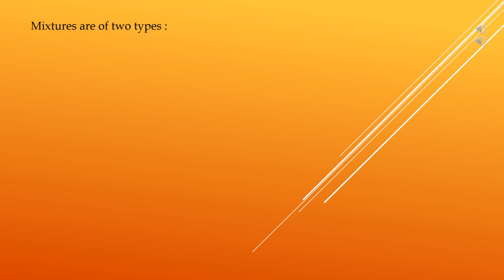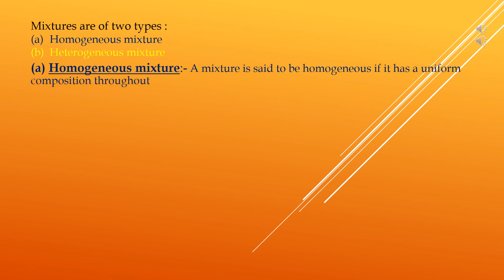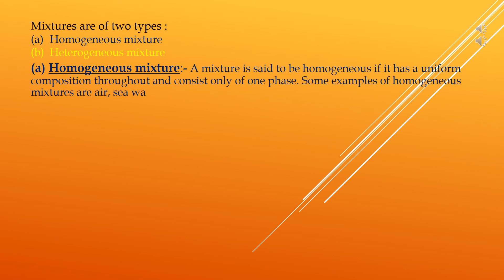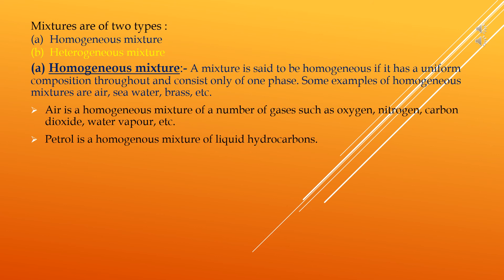Mixtures are of two types: homogeneous and heterogeneous. A mixture is said to be homogeneous if it has a uniform composition throughout and consists of only one phase. Examples of homogeneous mixtures include air, seawater, and brass. Air is a homogeneous mixture of gases such as oxygen, nitrogen, carbon dioxide, and water vapors. Petrol (gasoline) is a homogeneous mixture of liquid hydrocarbons. Alloys such as bronze and steel are homogeneous mixtures of metals.